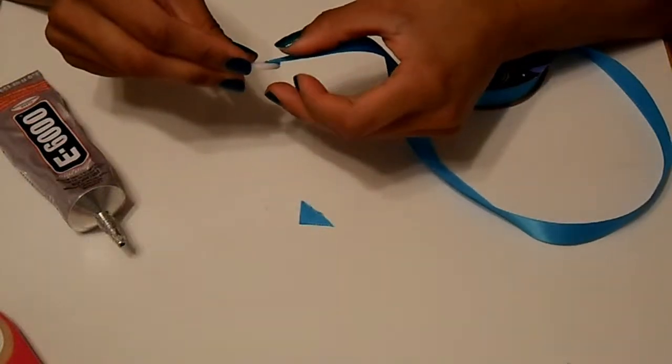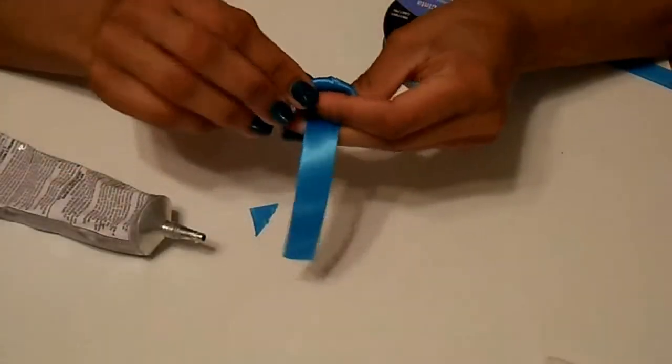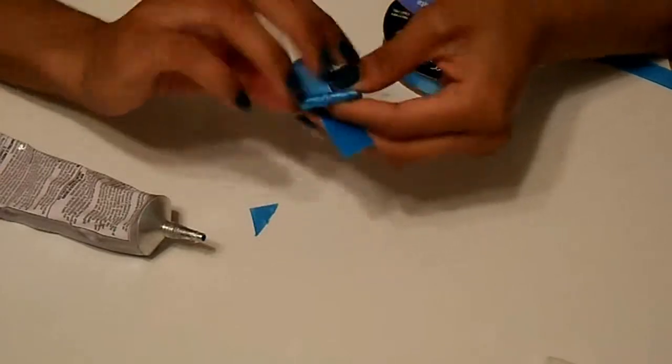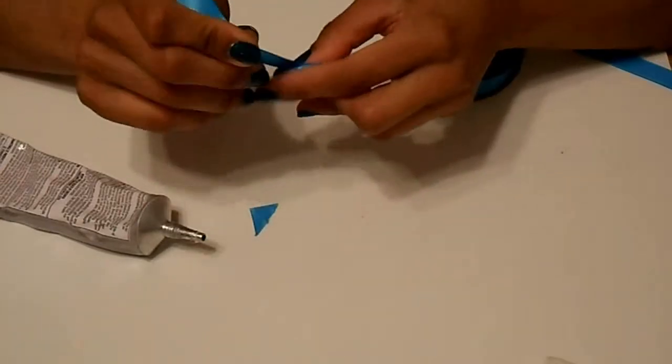All of the supplies I use will be listed below. Taking the ribbon with a little bit of glue on the end, I begin wrapping it around the plastic ring.